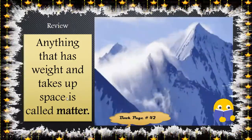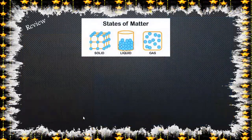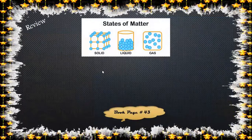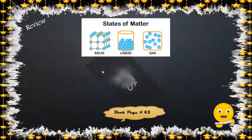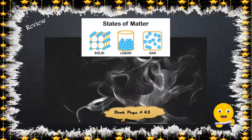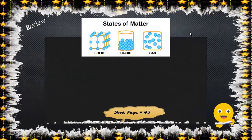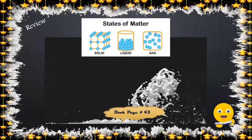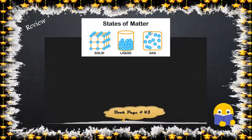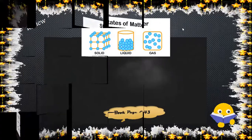Anything that has weight and takes up space is called matter. There are three states of matter: solids, liquid, and gas. In solids, particles are arranged regularly — they have fixed shape and fixed volume. Liquids can flow; they don't have a fixed shape but have fixed volume. Gas molecules are very far apart and can move freely in any direction; they don't have fixed shape or fixed volume.